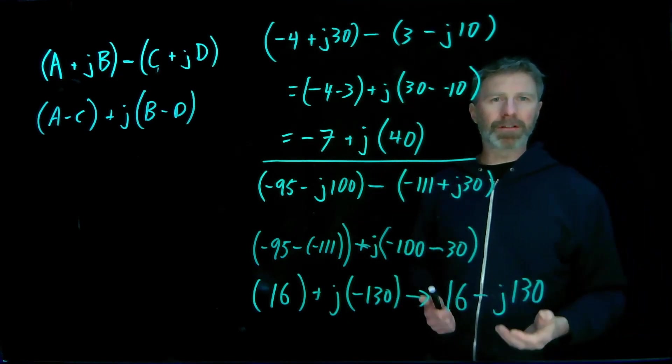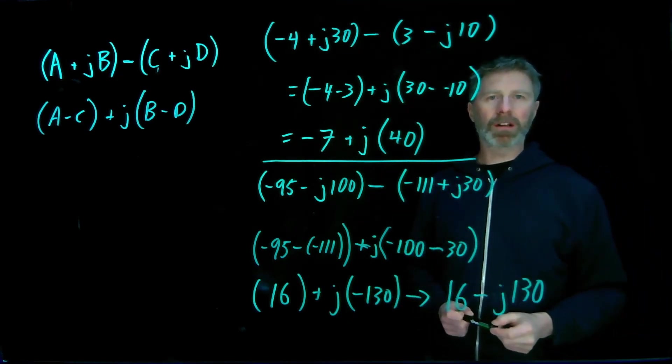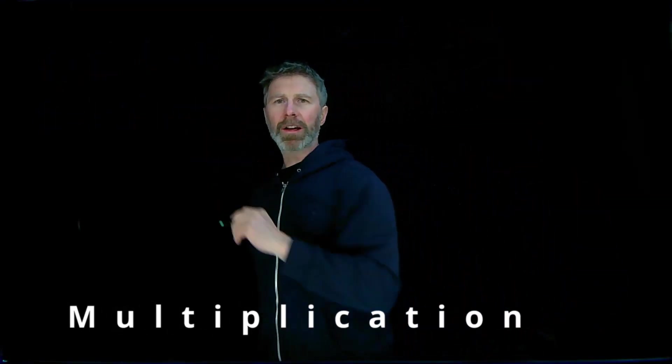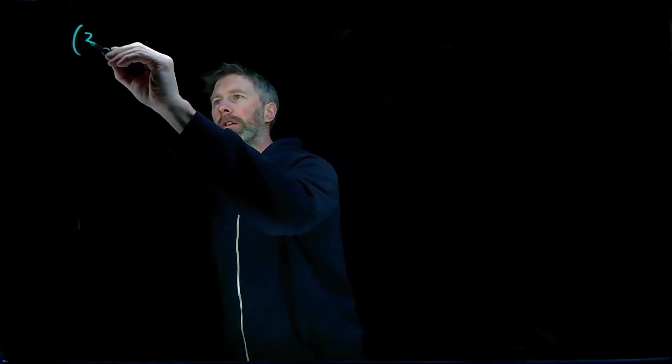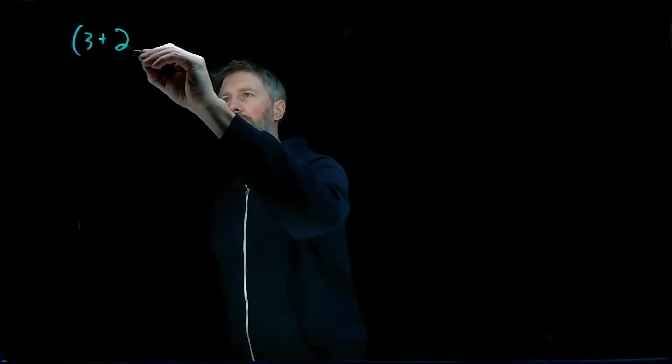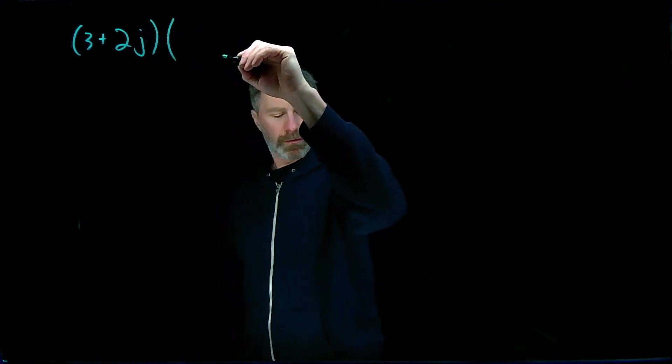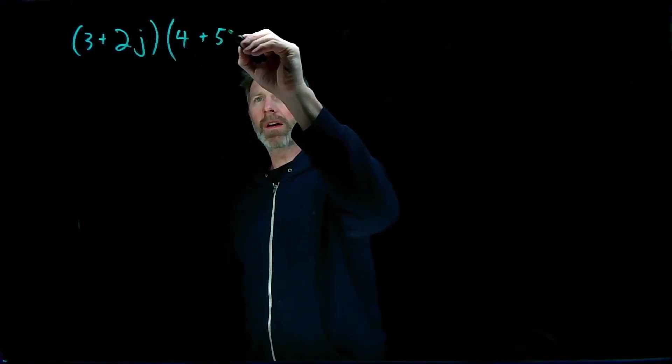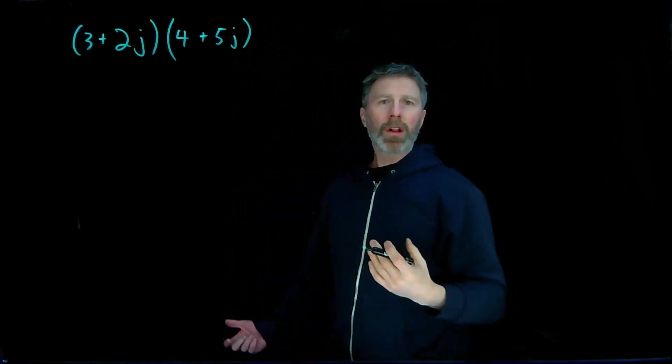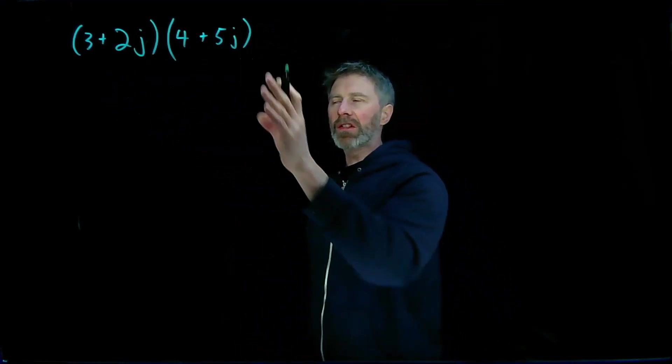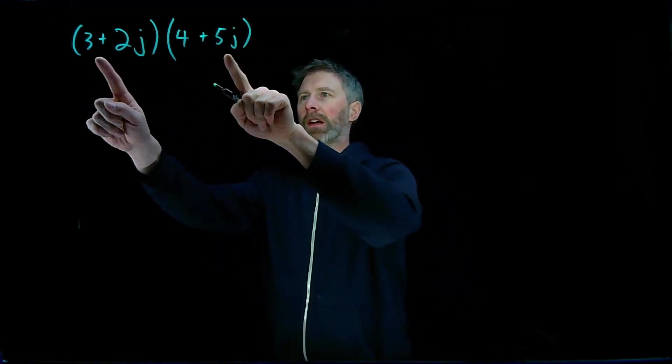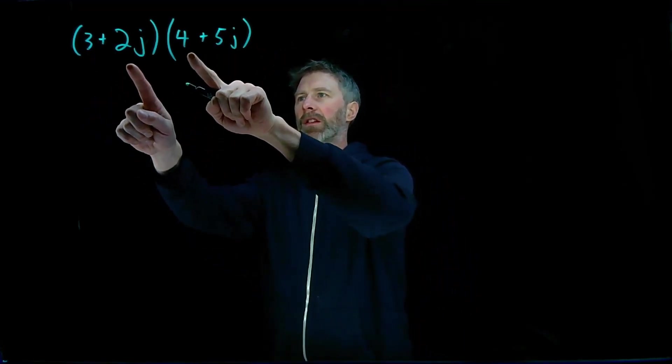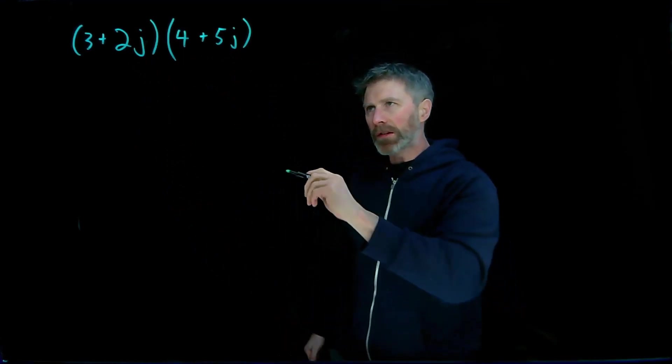So addition and subtraction, very easy when you're dealing with rectangular coordinates. Now let's move on to multiplication. And multiplication can also be done in rectangular coordinates. So if we have a number, let's go 3 plus 2j times 4 plus 5j. Now all I need to do to do this multiplication is just expand this out. So first times first, outside times outside, inside times inside, and last times last. So let's go through that process.